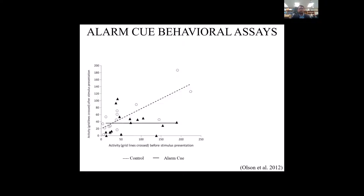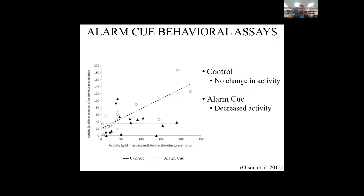For our research we had to find a way to quantify the data, so we used Olsen et al.'s behavioral assay. On the x-axis we have the total activity before stimulus, and on the y-axis we have the total activity after stimulus. The solid line denotes alarm cue treatment and the dashed line indicates a control treatment, in our case DI water. With the control, you expect to see no change in activity between the pre-trial and the post-trial, and with the alarm cue we expect to see decreased activity. The decreased activity is some sort of anti-predator behavior.